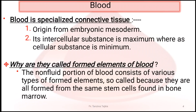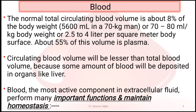Blood is called a specialized connective tissue because it originates from embryonic mesoderm, and its intercellular substance is maximum while cellular substance is minimum. Formed elements are called so because they are all formed from the same stem cells found in the bone marrow.